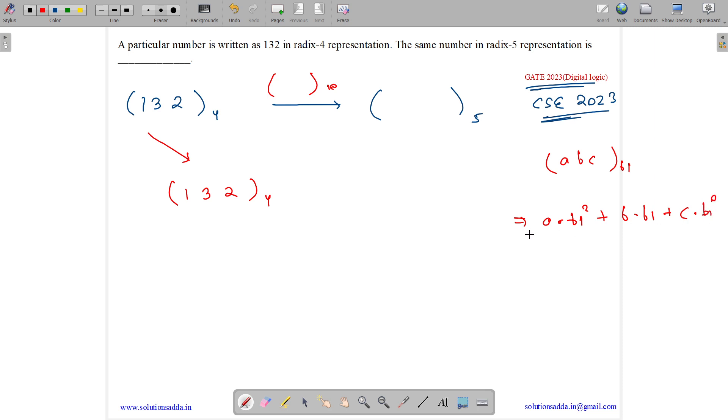So its equivalent in base-10 will be 1 into 4 square plus 3 into 4 to the power 1 plus 2 into 4 to the power 0. So it is equal to 16 plus 12 plus 2. So it is equal to 30 in base-10.